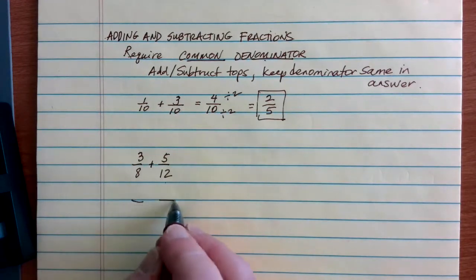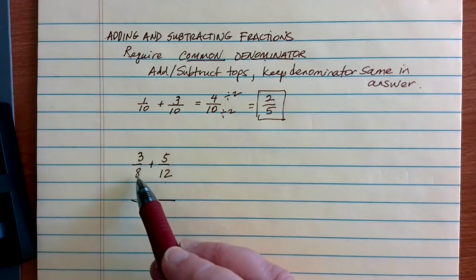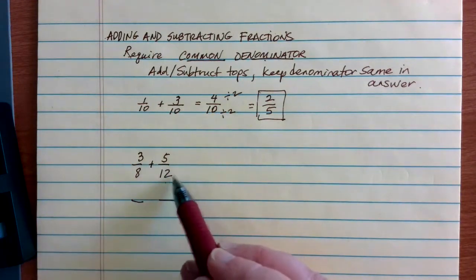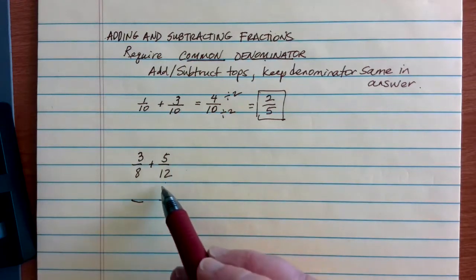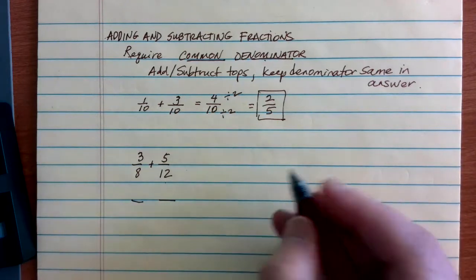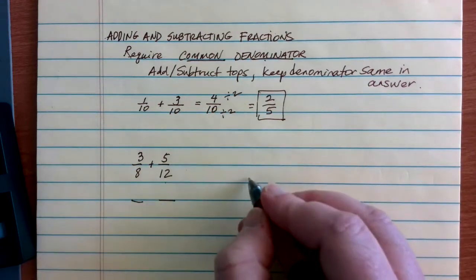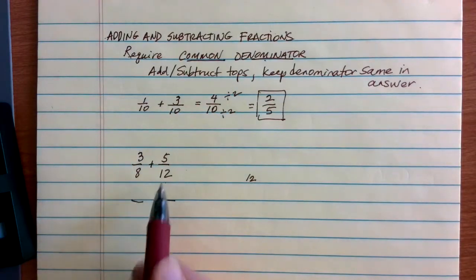How do you come up with a common denominator? Well, what we're doing is we're trying to find a number that we can multiply and end up with—multiply 8 by something or multiply 12 by something and end up with the same answer. My little process that I like to use is I always start with the biggest number, so I'm going to start with 12.